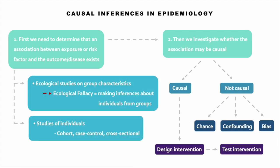To identify a causal factor, first we need to determine that an association between exposure or risk factor and the disease or outcome of interest exists. This can be done with ecological studies on group characteristics, which is a quick, inexpensive way to gather information about the risk of disease in the real world. But while ecological studies are helpful for generating hypotheses and documenting co-occurrence of disease and other factors in a population, they look at data at the population level rather than individual level, so they can't tell if risk factors and disease are occurring in the same people. They're also vulnerable to the ecological fallacy — making inferences about individuals from groups.